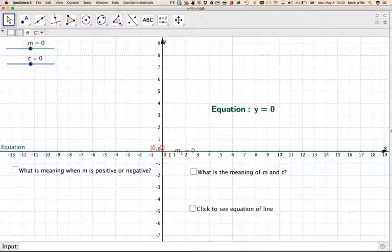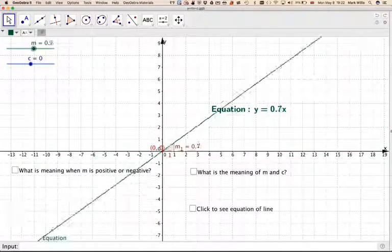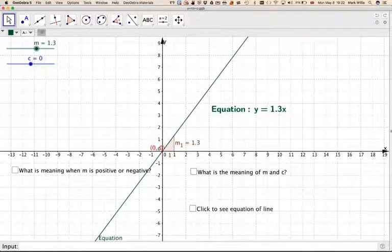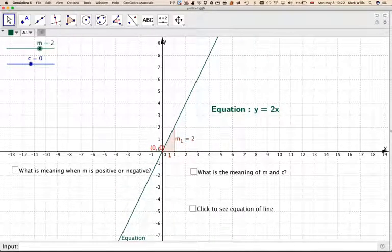Now, if I move m, then we get a line which has a slope. Let's take this one here. What we've got to do, what is the meaning of m and c in the equation?